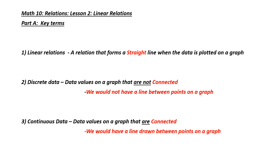Math 10 Relations Lesson 2: Linear Relations. There are three key terms we need to know for this topic. The first one is linear relation. Linear means straight. Therefore, a linear relation is one where the relation forms a straight line when the data is plotted.